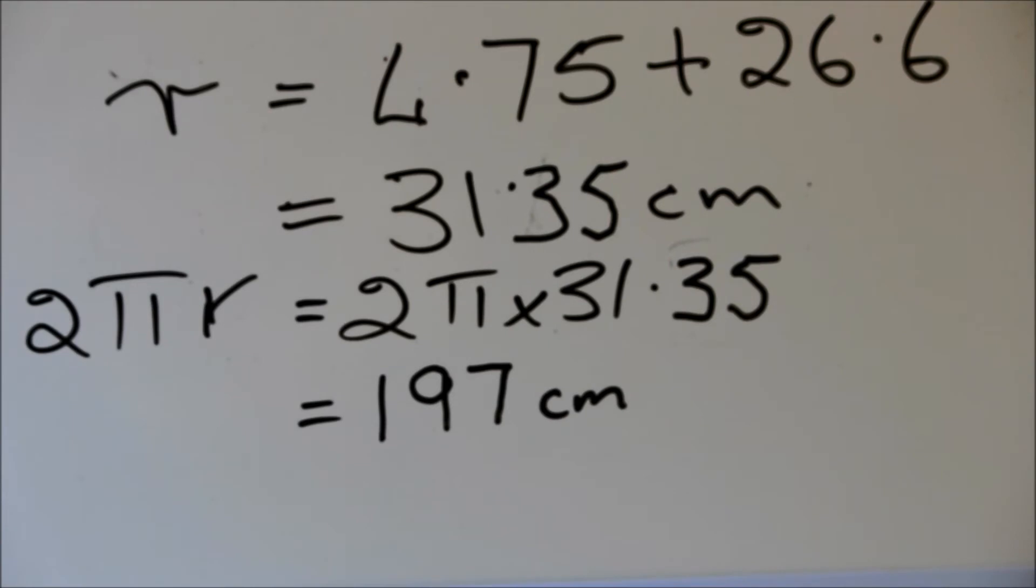You can see that Space City will be the radius of the orange plus 26.6 centimeters from the middle of the orange. That is r is equal to 4.75 plus 26.6, that's 31.35 centimeters.